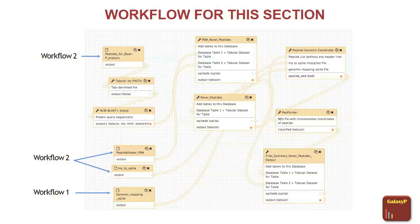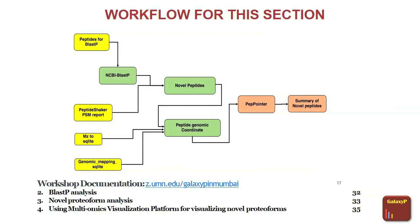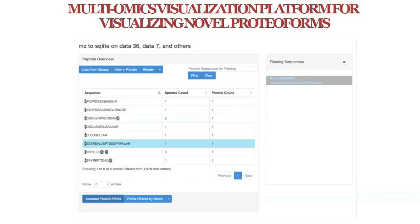That information is used to identify novel peptides, and then the pep pointer tool generates a tabular output for further analysis. I would also like to talk about MZ2 SQLite, which is used to visualize your data. I strongly encourage you, if you are interested in spectral visualization, to go through the Galaxy instance and documentation — it really does not take long. Each workflow takes about 12 minutes for the first, and just 2 minutes each for the others. The MZ2 SQLite tool takes your MZ identML file and generates a list of all identified peptides with associated information.